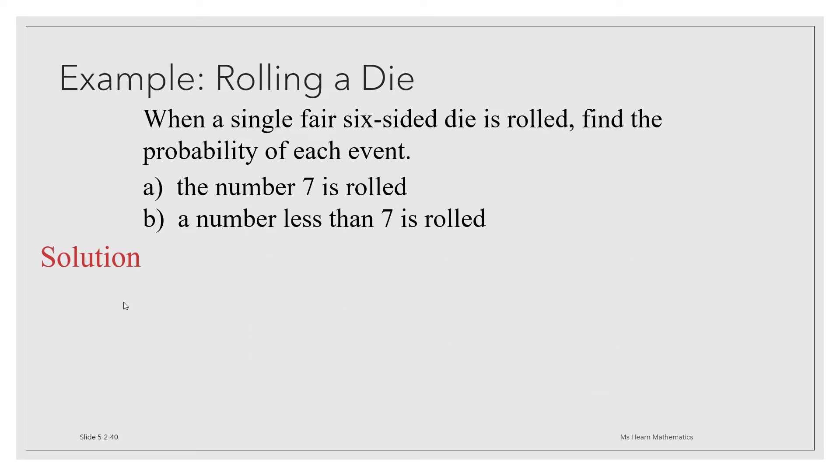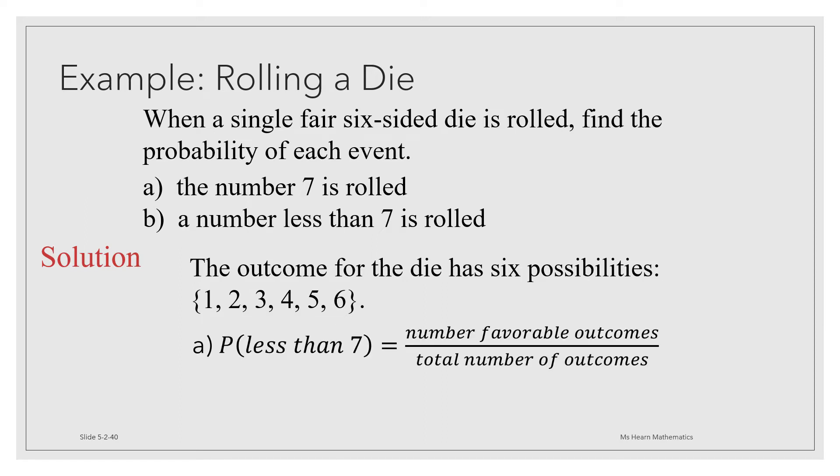Now let's look at B. We need to find the probability that a number less than 7 is rolled. Once again, we know that our sample space only contains 6 possibilities, 1, 2, 3, 4, 5, and 6. To find the probability that we roll a number less than 7, we have to take the number of favorable outcomes divided by the total number of outcomes. In both cases, that number is 6. 6 divided by 6 is 1. So this demonstrates that by the definition of theoretical probability, the probability of a guaranteed event is equal to 1.